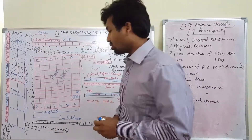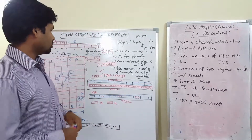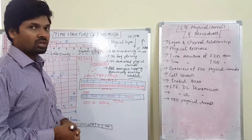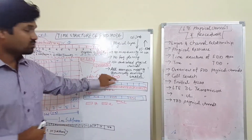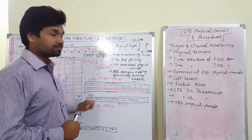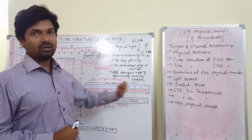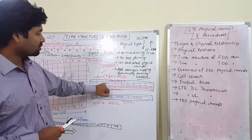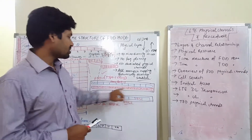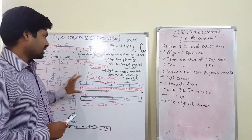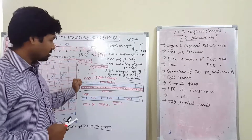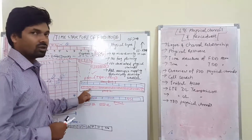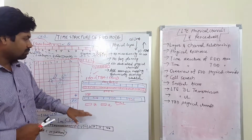Talking about the time structure of FDD mode operation, we have the Type 1 frame used in FDD. In FDD we normally use two different frequency bands — frequency band 1 for downlink transmission and frequency band 2 for uplink. In the diagram, the blank boxes represent downlink and the dotted boxes represent uplink. This is the Type 1 frame of FDD in LTE.